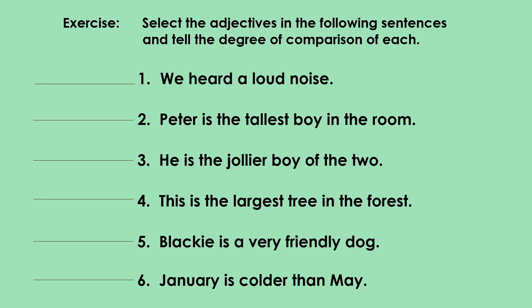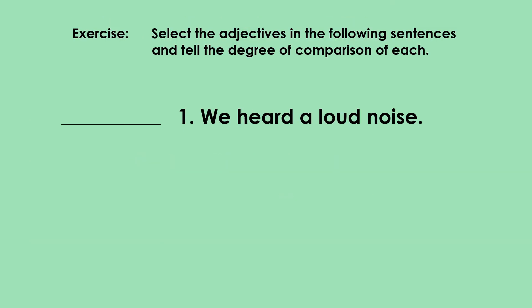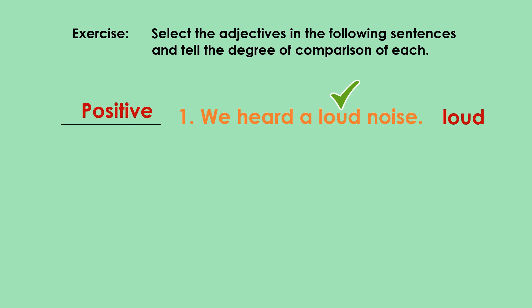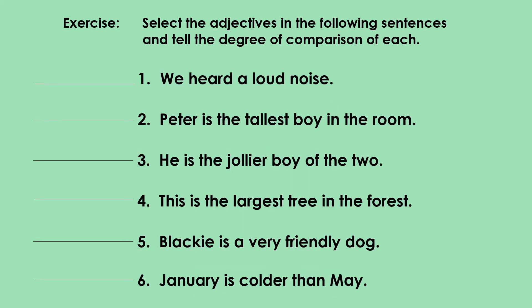Now let's try to do this exercise: select the adjectives in the following sentences and tell the degree of comparison of each. You may use your pad paper and write your answers there. Number one is done for you: 'We heard a loud noise.' The adjective is 'loud' and the degree of comparison is positive.